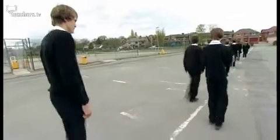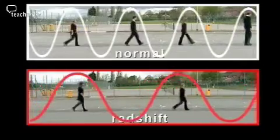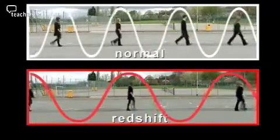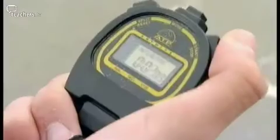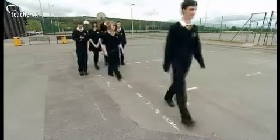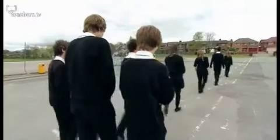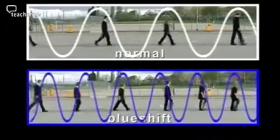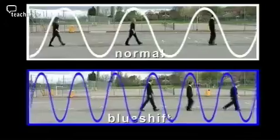When an object is moving away, light from it appears to have an increased wavelength — it is redshifted. You can also perform the same demonstration with the wave group moving forwards. To the observers, the wave will appear to be squashed; its wavelength will have decreased. When an object is moving towards us, its light will appear to have a shorter wavelength. This is blueshift.